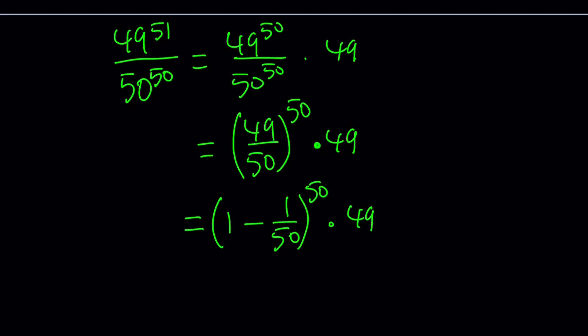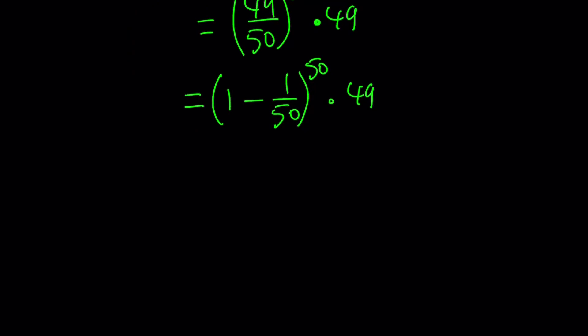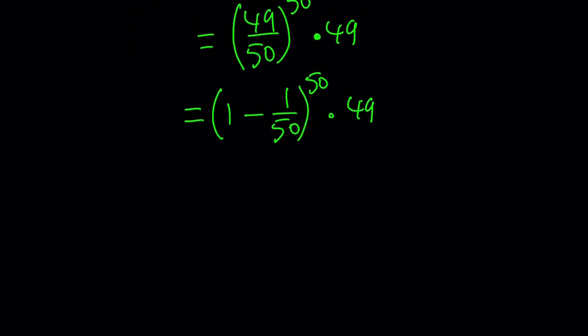I'll be using a well-known inequality called Bernoulli's inequality. It goes as follows: if x is greater than negative 1, then 1 plus x to the power n is greater than or equal to 1 plus xn, where n is a non-negative integer. We're going to apply this inequality to our expression. In this case, I want to use a negative x. Negative x's are okay as long as x is greater than negative 1.